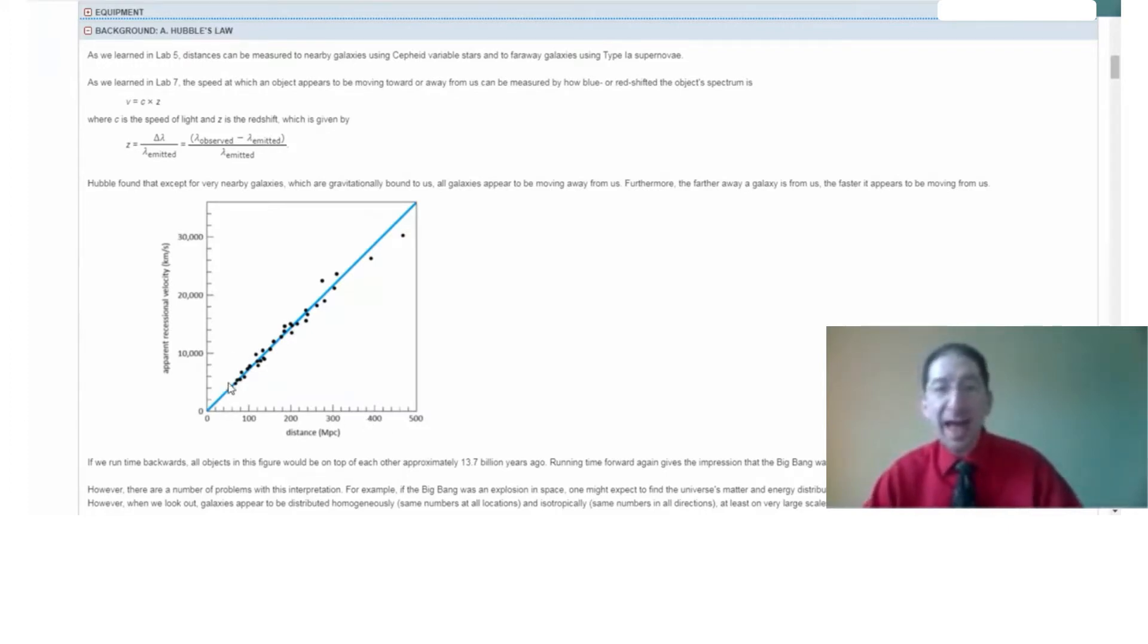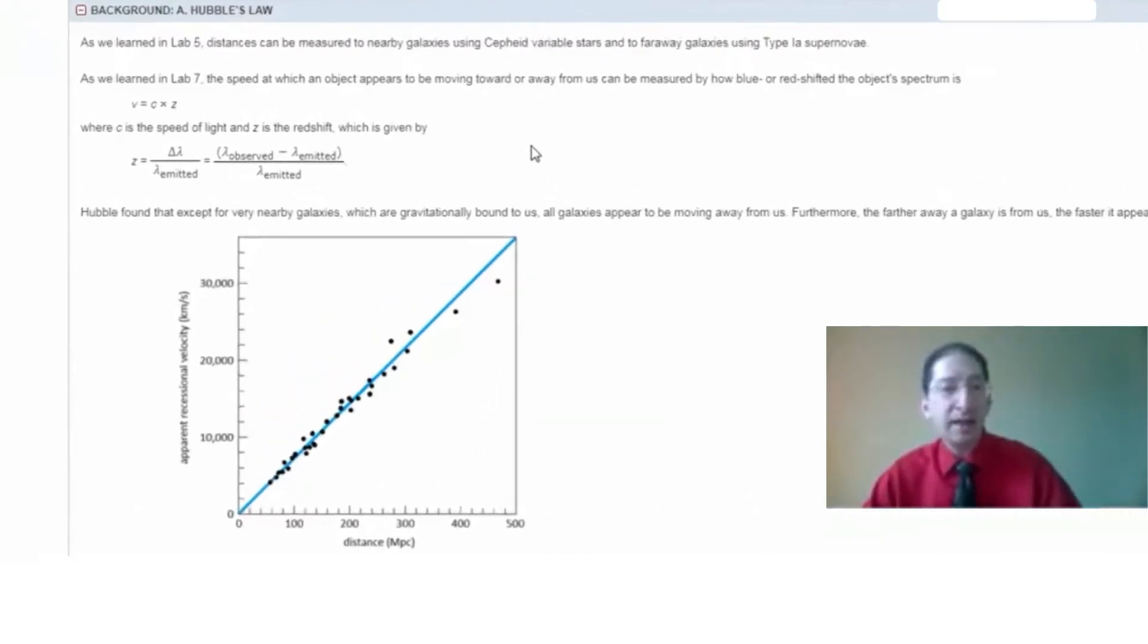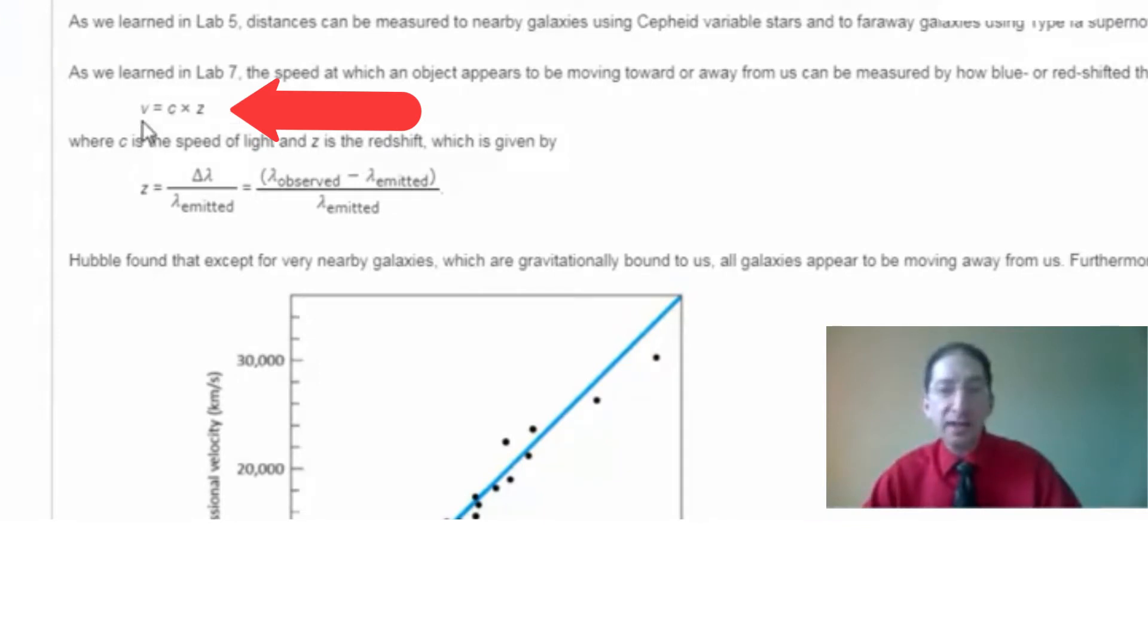For the y-axis, how fast the galaxies appear to be moving away, we can use the Doppler effect, which we learned about in Lab 7. And that's given by this equation, where the velocity of the object is equal to the speed of light times the redshift, and the redshift of the object is equal to the change in wavelength divided by the emitted wavelength, where the wavelengths are measured from the spectrum of the object.